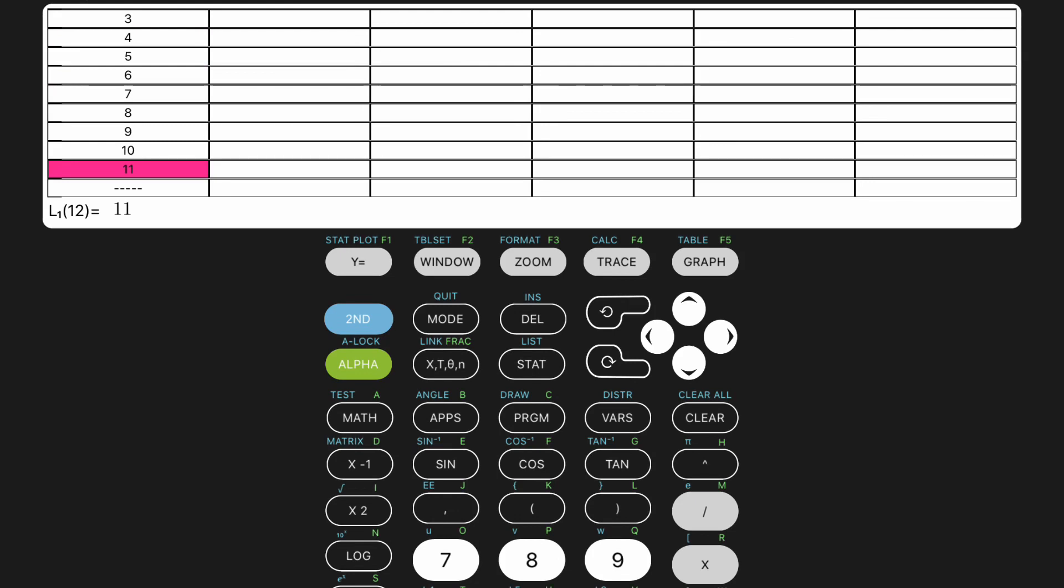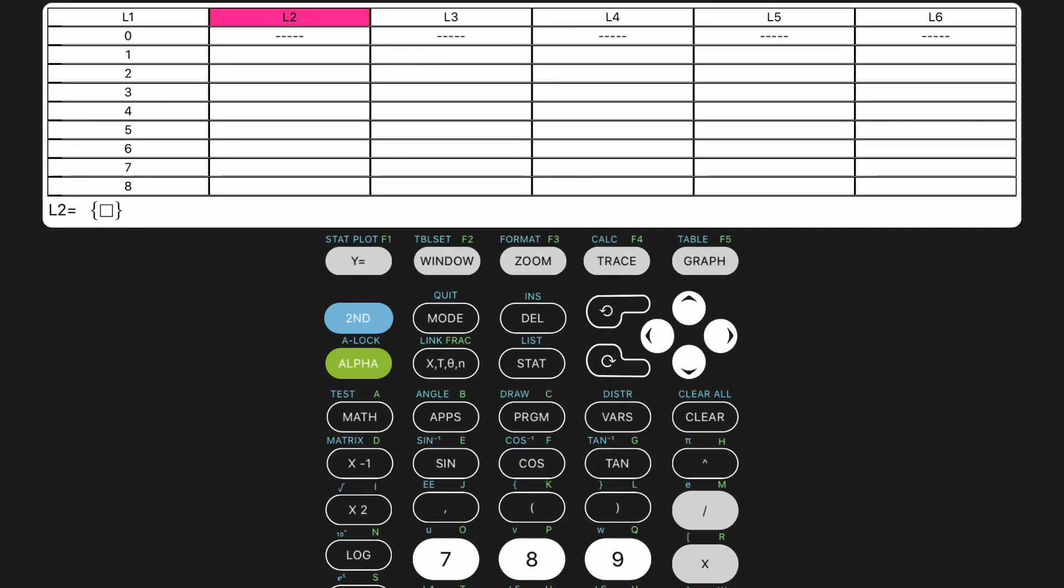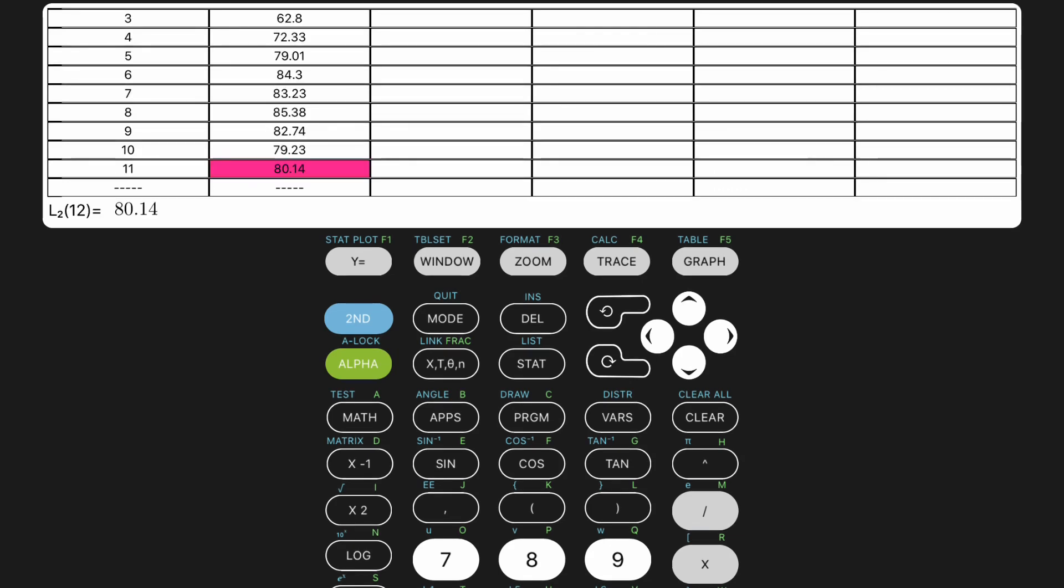Then, you can click your right arrow to move over to List 2, which is where you will enter your Y values, which in our case are Nike's closing prices. This may take some time, especially if you have a lot of values, so be sure to double-check your numbers.